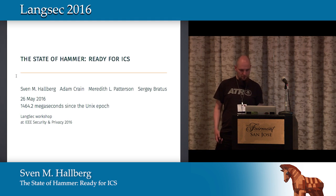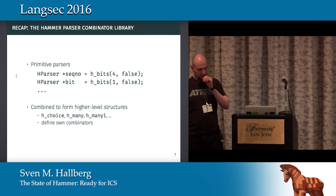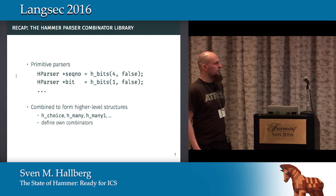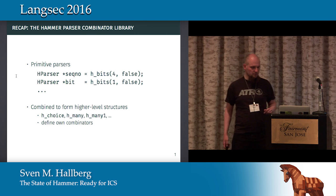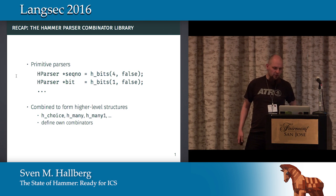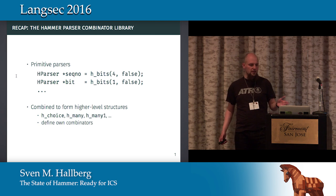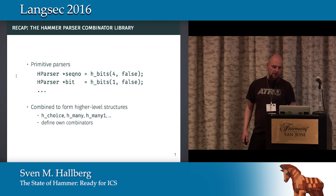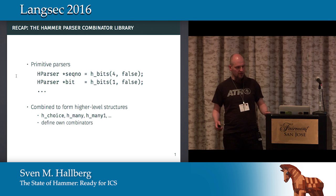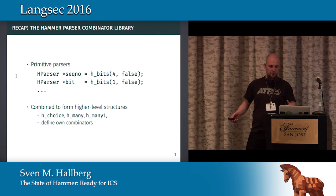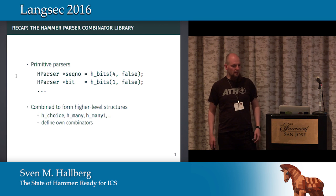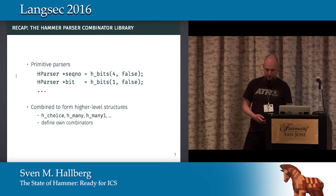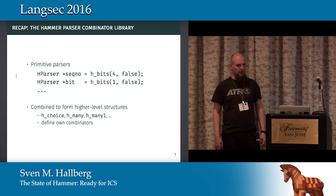To give you a quick recap, the Hammer Parser Combinator Library, for those who haven't seen it, is a library meant to bring more grammatical parser specification into the world of C. What you see here is a few examples: we have primitive parsers that are then combined by higher-level combinators into more complex structures. You can also define your own combinators using those, and by that we hopefully arrive at a specification for our protocol which is at the same time a grammar and also its implementation.